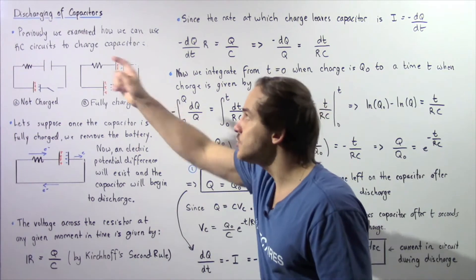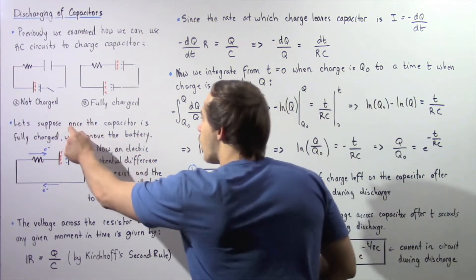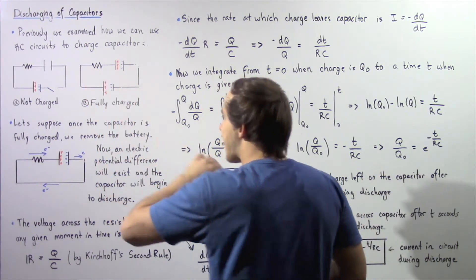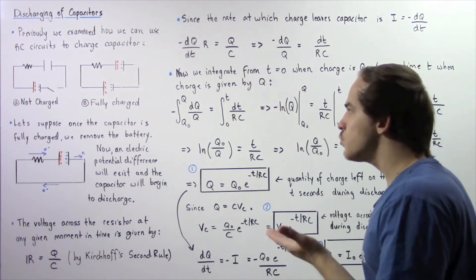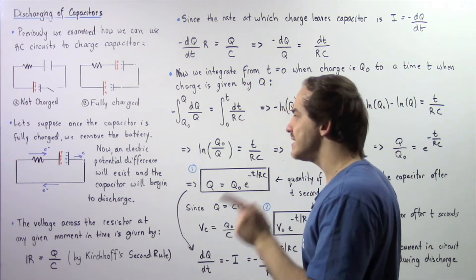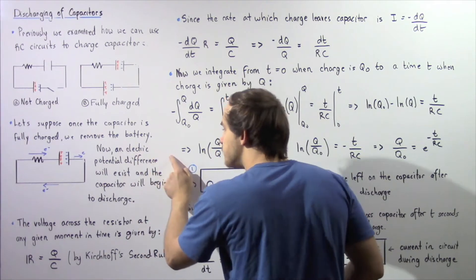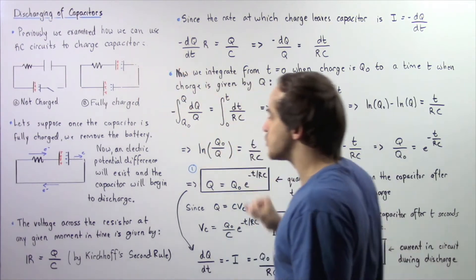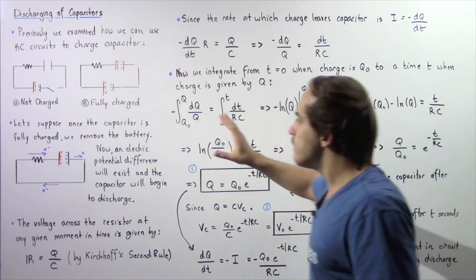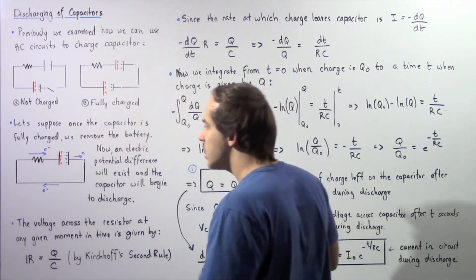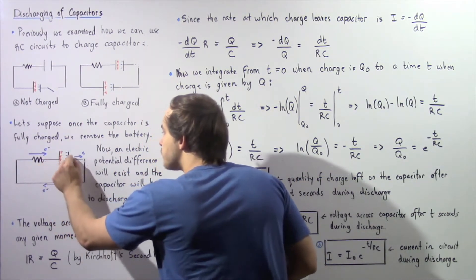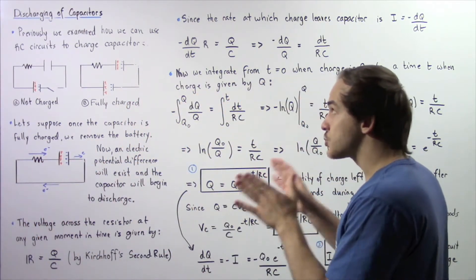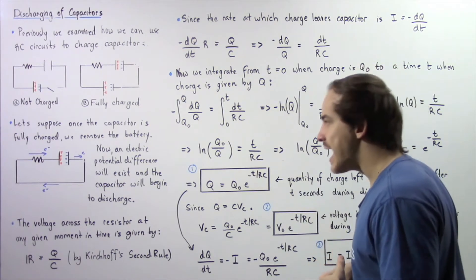Now let's discuss discharging of our capacitors. Suppose once the capacitor is fully charged, we remove the battery. Once we remove it, we have an electric potential difference — a voltage difference that will exist within our circuit, and electrons will begin to flow from one side of our capacitor to the other side via the closed electric circuit. This is called discharging of our capacitor.